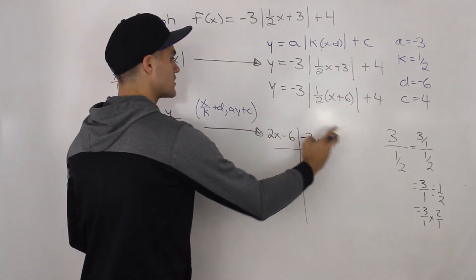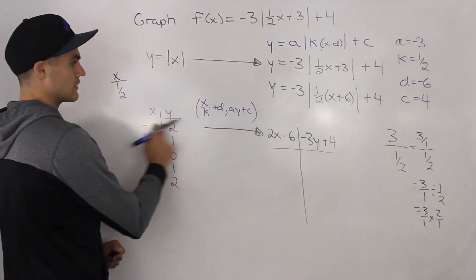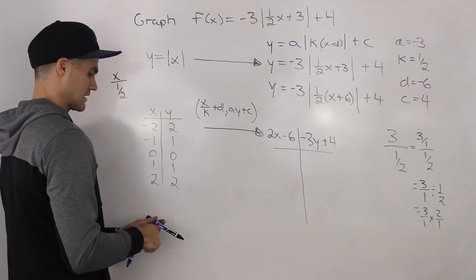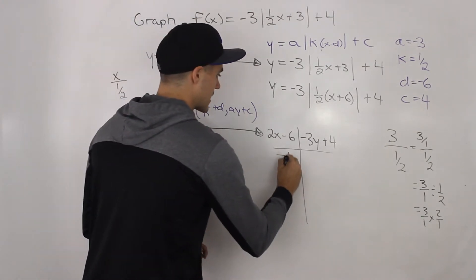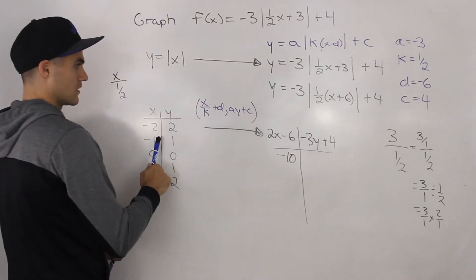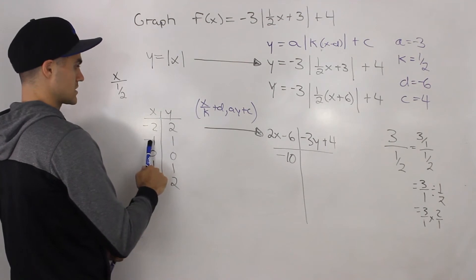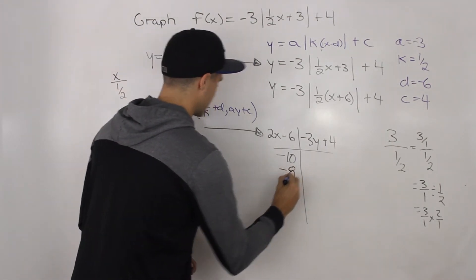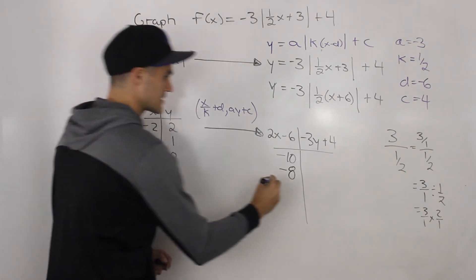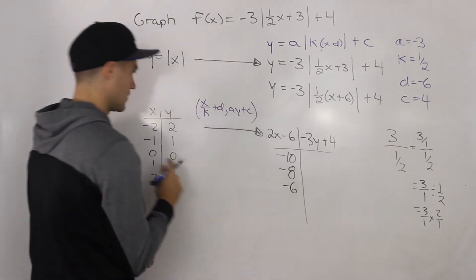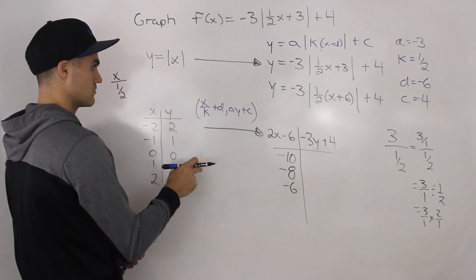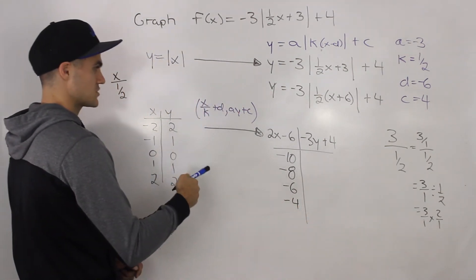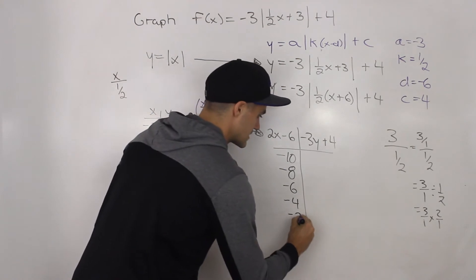Applying the x mapping (two x minus six) to each parent x value: negative two times two minus six gives negative eight; zero times two minus six gives negative six; one times two minus six gives negative four; and two times two minus six gives negative two.